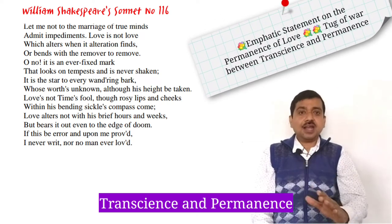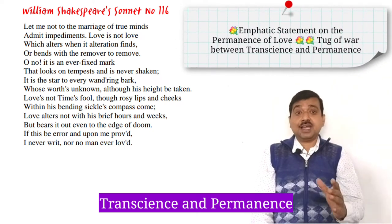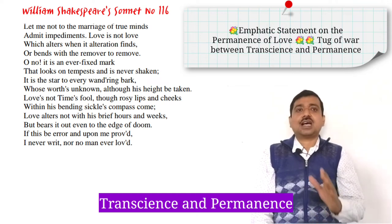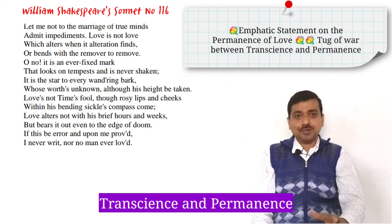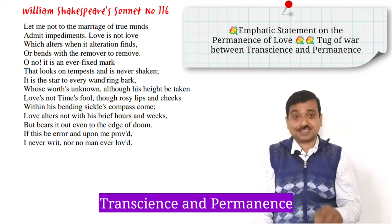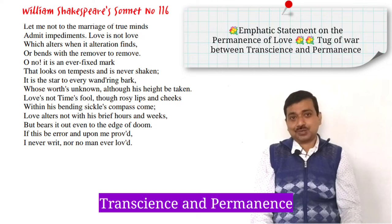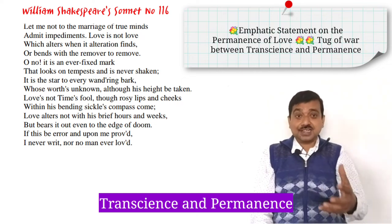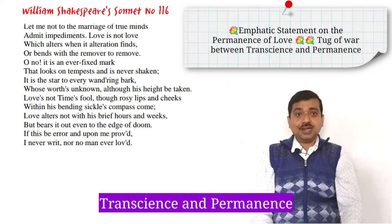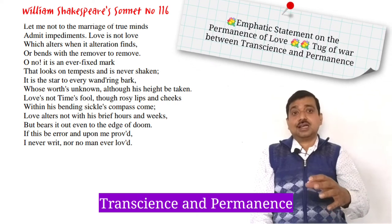Shakespearean Sonnet Number 116, 'Let Me Not to the Marriage of Two Minds,' is an emphatic statement on the permanence of love — a love which by its very nature defies time. The sonnet asserts that love is unalterable, irrevocable, and constant; that love alters not with his brief hours and weeks but bears it out even to the edge of doom. There is a tug of war between transience and permanence, between the ravaging power of time and the permanent emotions of love.